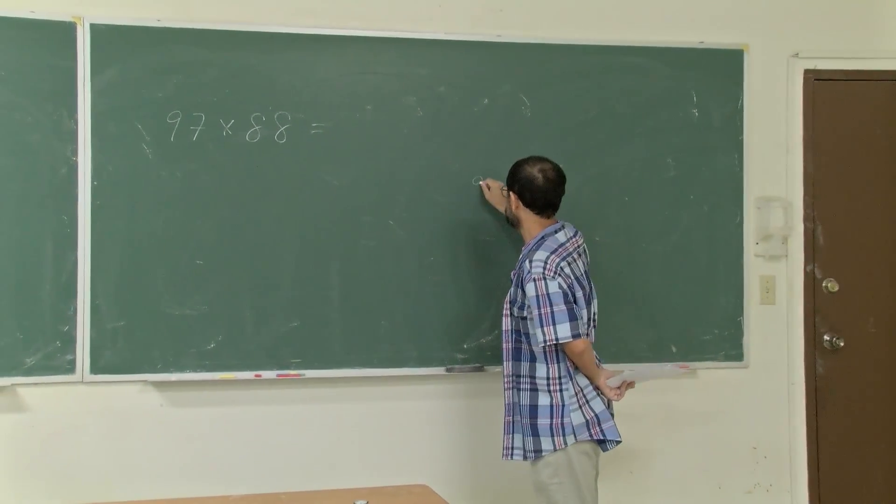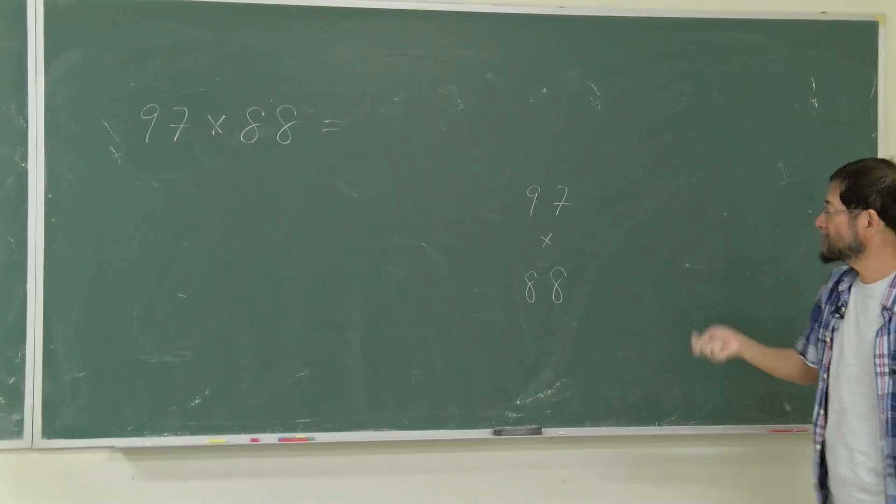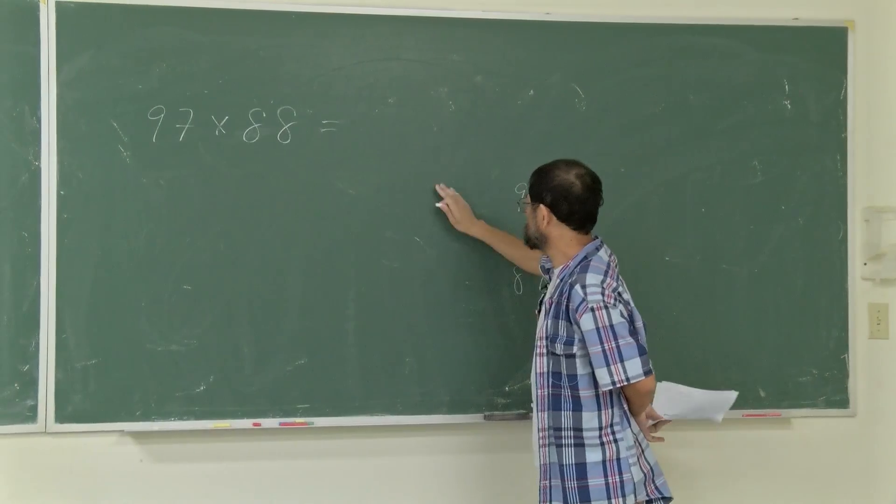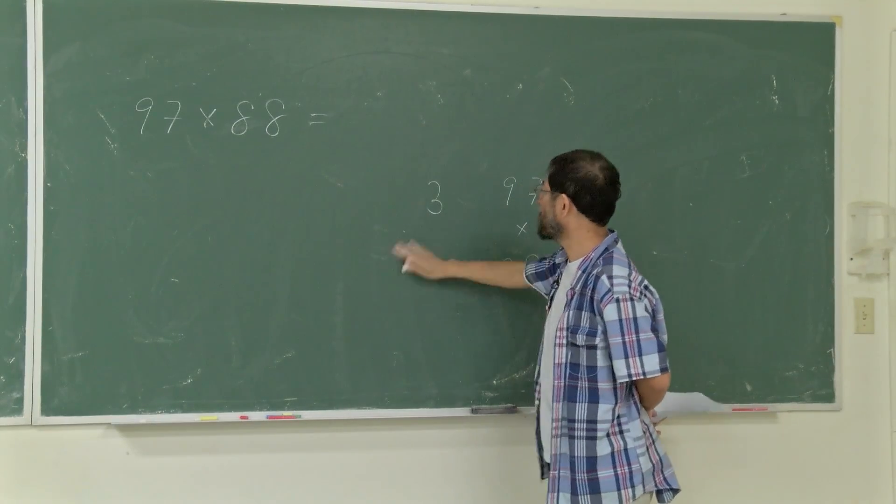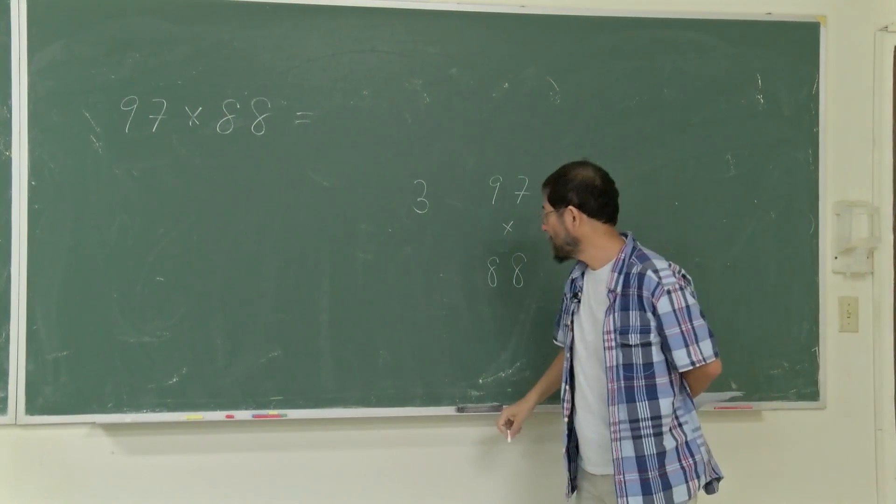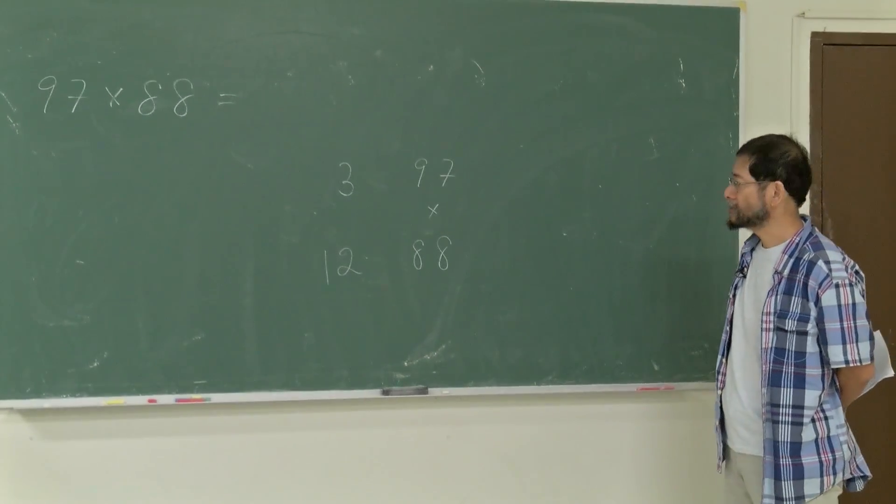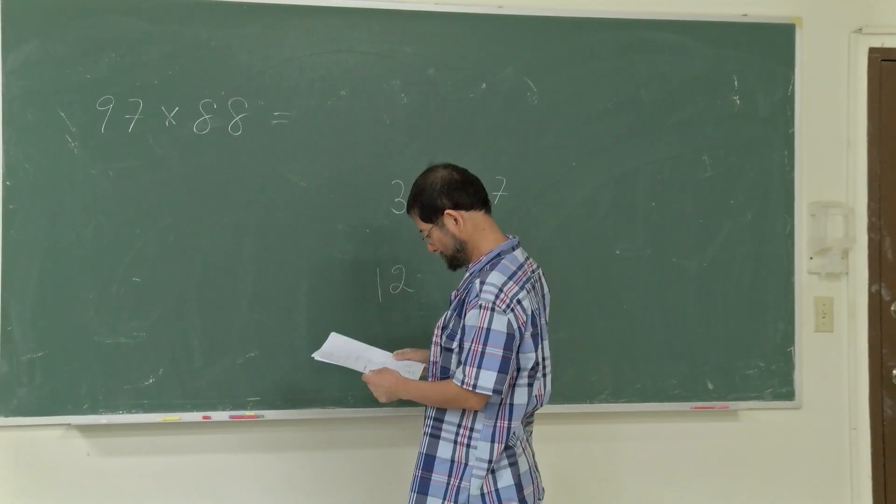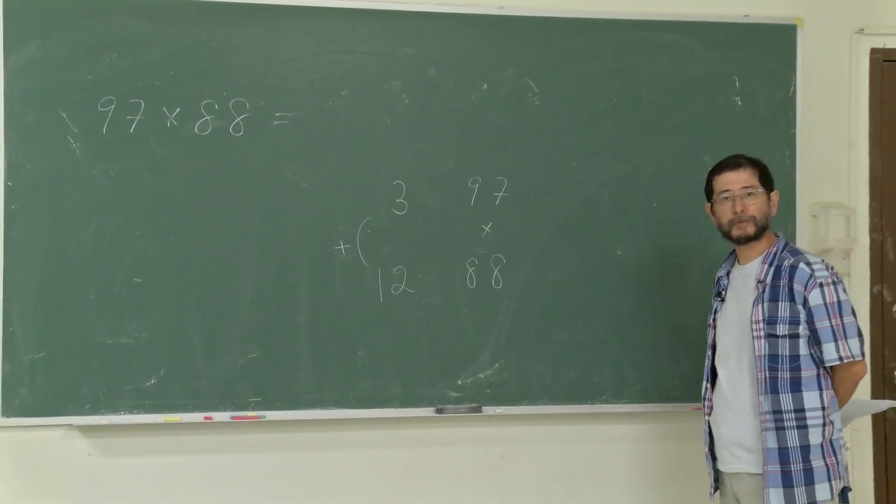97 times 88. You can still do it, but here's another way to compute with a new method. Pay attention: these two numbers are very close to 100. So how much more? In other words, how much is 100 minus 97? You need three more to get 100. Similarly, for 88, 100 minus 88 is 12, so you need 12 more to get 100. Then you add them together: 3 plus 12, which is 15.